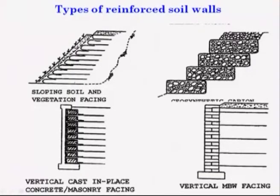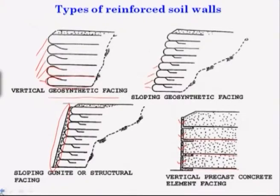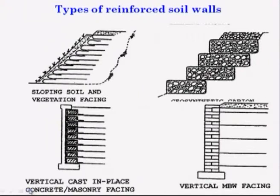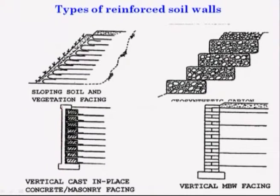The third type is stepping geosynthetic gabion — you can provide a gabion wall by stepping using mesh, wires, or geosynthetic wires. The fourth type is vertical cast-in-place concrete or masonry facing — instead of placing precast units one over another, you can go for a single vertical cast-in-place concrete with masonry facing, then allow the reinforcement to be placed. Vertical MBW facing can also be used.